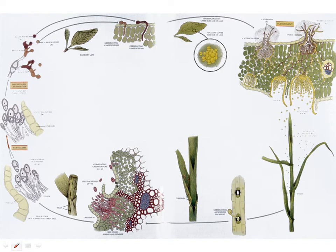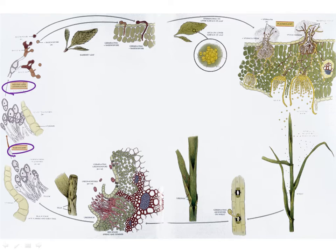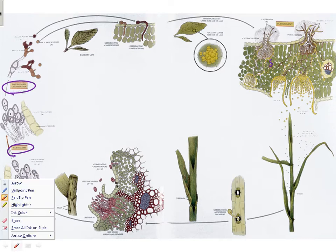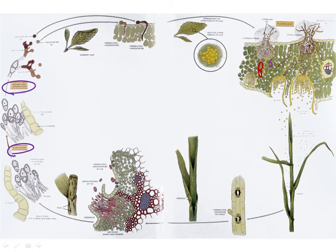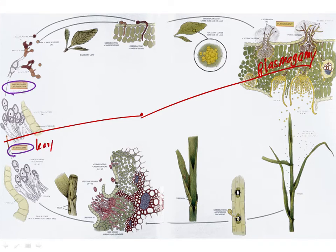Plasmagamy and karyogamy are going to occur just before the basidium forms, so they're very close together. Here's karyogamy, and here is meiosis. Plasmagamy does not occur at the same point — plasmagamy occurs way over in this other part of the cycle. So we can draw our three lines: plasmagamy, karyogamy, and meiosis.